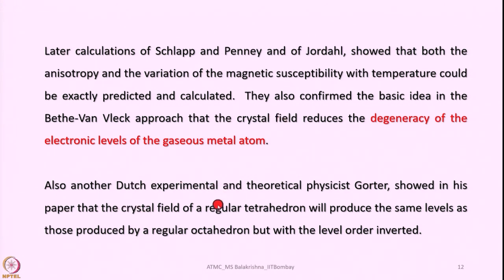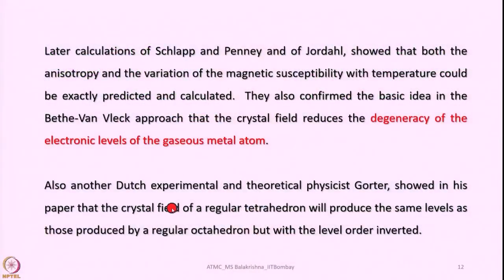Dutch experimental and theoretical physicist Gauter showed in his paper that the crystal field of a regular tetrahedron will produce the same levels as those produced by a regular octahedron, but with the level order inverted. So the splitting in an octahedral field is reversed in a tetrahedral field. In an octahedral field, Eg is higher energy and T2g is lower energy, whereas in a tetrahedral field T2 becomes higher in energy and E becomes lower in energy.